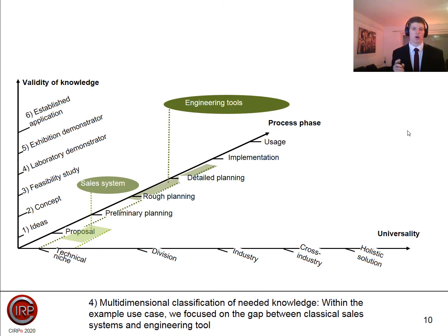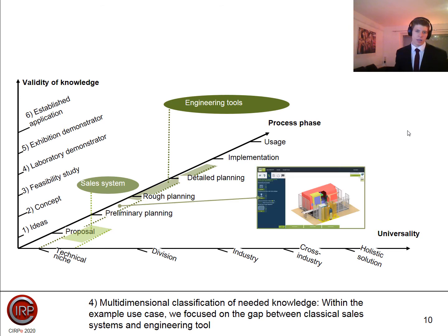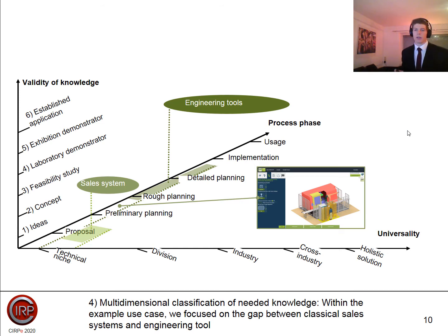The second step is knowing how deep your knowledge has to go. With a general rule — like an 80-20 approach — you can get a quite good solution without needing the detailed formula, so it is much faster. Therefore, we focused on 80-20 rules, very general rules, but for concept planning these are totally enough. Knowledge acquisition becomes much faster, and you can also obtain it faster.